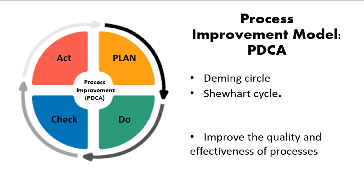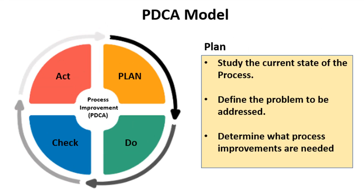In the PDCA model, process improvement is viewed as a cycle that starts with the Plan step. The Plan step includes studying the current state of the process and defining the problem to be addressed.